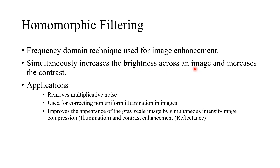The application areas of homomorphic filtering include removing certain kinds of noise called multiplicative noise, and also correcting non-uniform illumination in images. Sometimes when an image is acquired with the help of sensors, the illumination on the image will not be uniform. Due to this non-uniformity in illumination, the acquired image will not be good or pleasing. In such cases, this poorly or non-uniformly illuminated image can be enhanced with the help of homomorphic filtering.